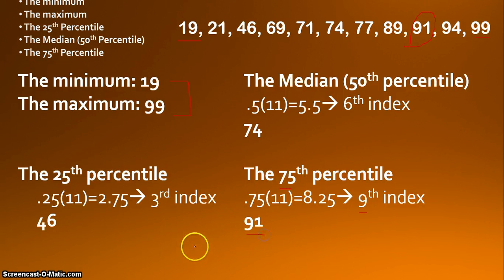So that's it. That's how you calculate a five number summary. All you have to do is find the minimum, the maximum, the 25th percentile, the median, also called the 50th percentile, and the 75th percentile. That's it. Those are the five things you have to calculate. Minimum, maximum, 25th, 50th, and 75th percentile. That's all you got to do.